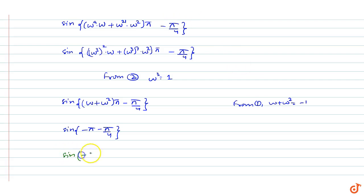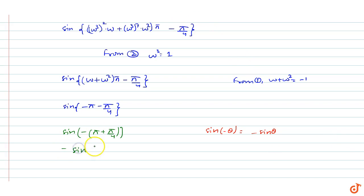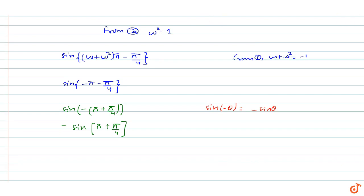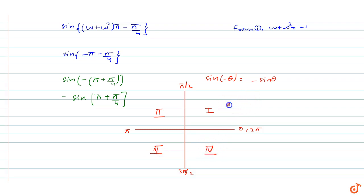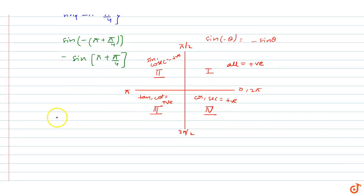Taking minus common, we get sin of minus (pi minus pi by 4). We know that sin of minus theta equals minus sin theta. So we get minus sin of (pi plus pi by 4). Looking at the coordinate system: 0, pi by 2, pi, 3pi by 2, and 2pi define the four quadrants. In the first quadrant all trig functions are positive; in the second, only sin and cosec are positive; in the third, only tan and cot are positive; in the fourth, only cos and sec are positive. Since pi plus pi by 4 is in the third quadrant, sin is negative there. So this becomes minus of minus sin(pi by 4), which equals sin(pi by 4).